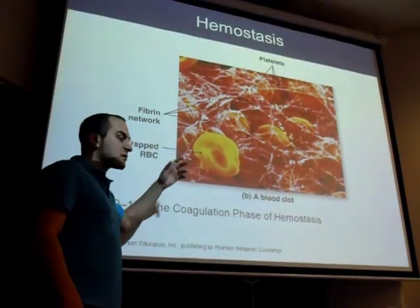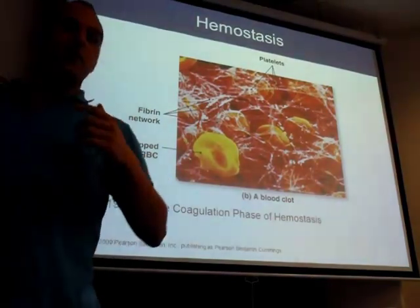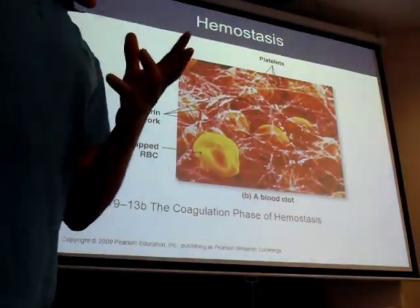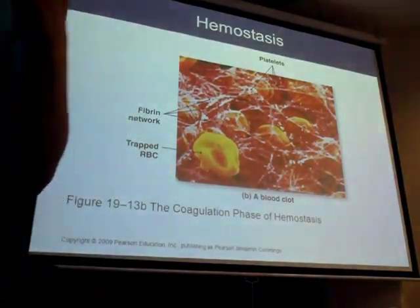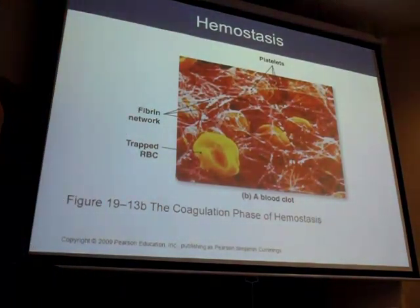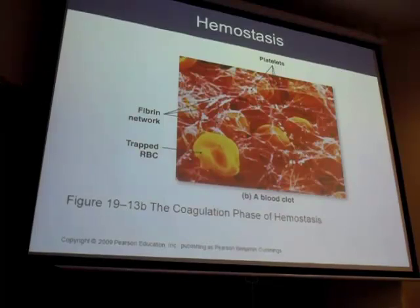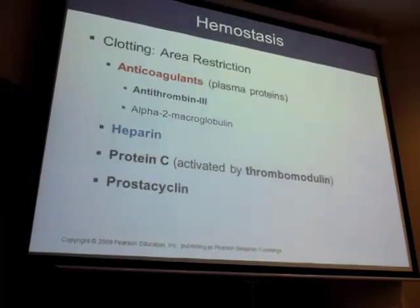This is a 3D scanning electron microscope image showing red blood cells stuck in a fibrin network — the spider web is the fiber network, the platelets are making the web. When you see a 3D image like this, that's a scanning electron microscope.